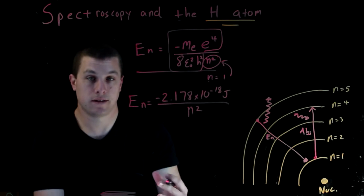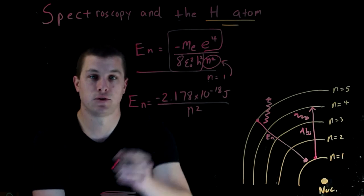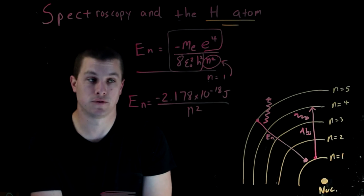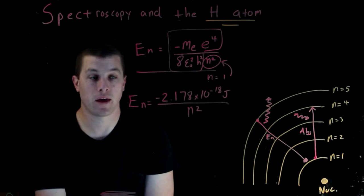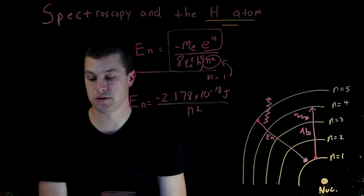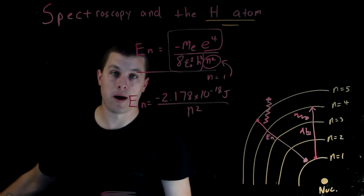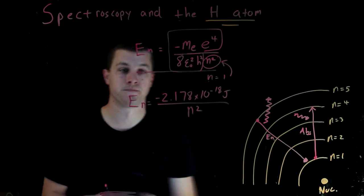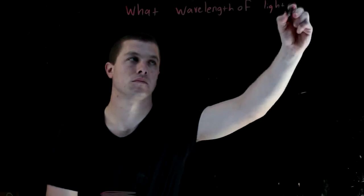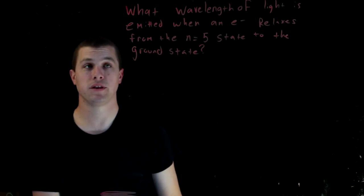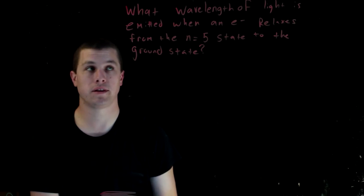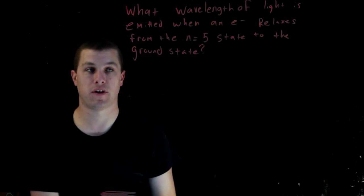We've collected all those constants into one constant in joules, which simplifies our calculations. Now let's use these equations to solve a problem. The question asks: what wavelength of light is emitted when an electron relaxes from the n equals 5 state to the ground state?